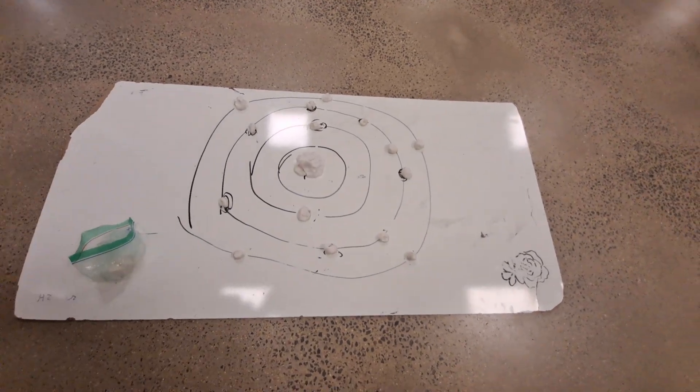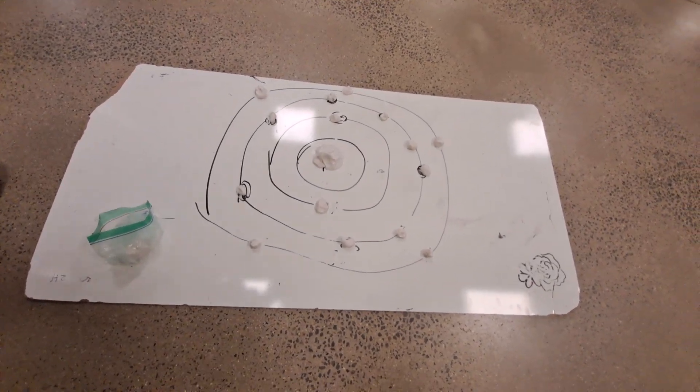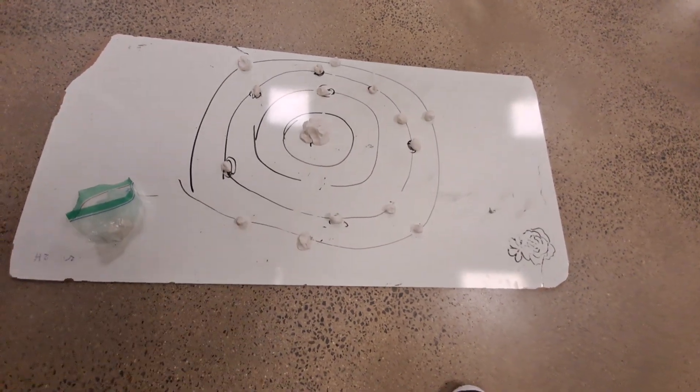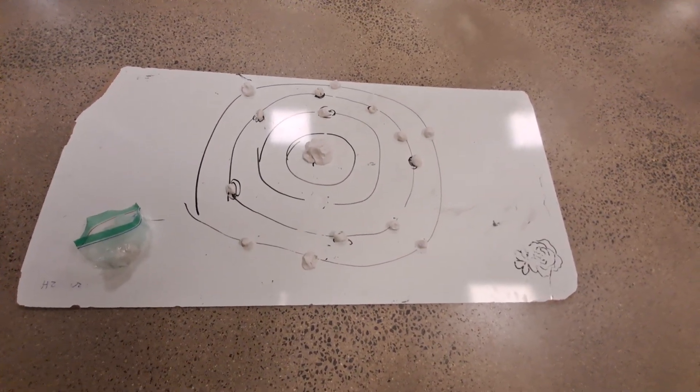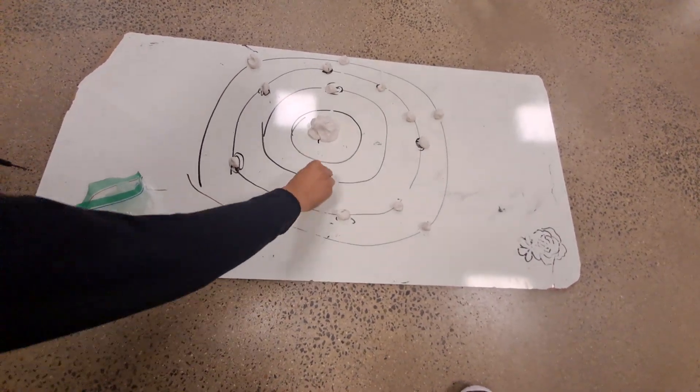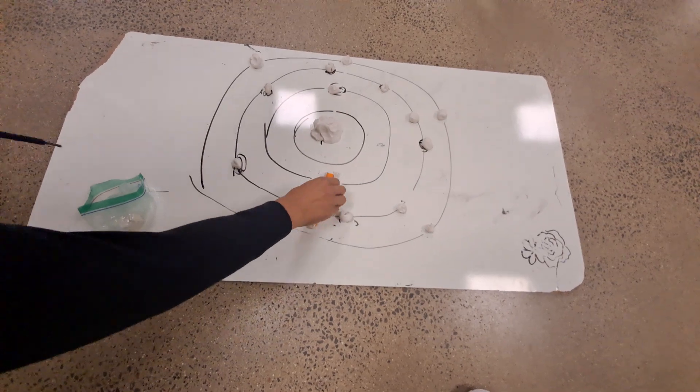Another electron transition we can see is when this same electron is given extra energy and goes up to the second energy level. Then, when it falls back down, it emits light. This light is orange.